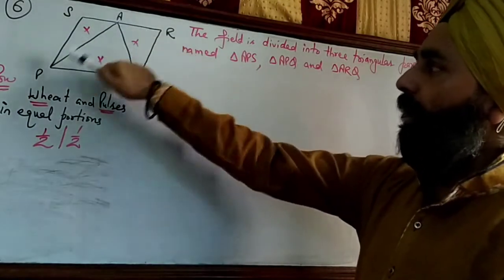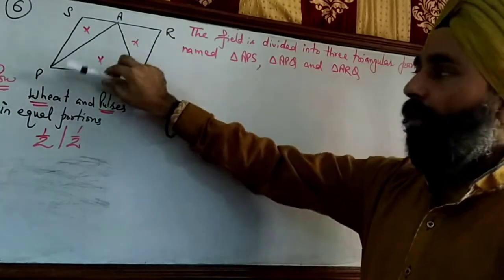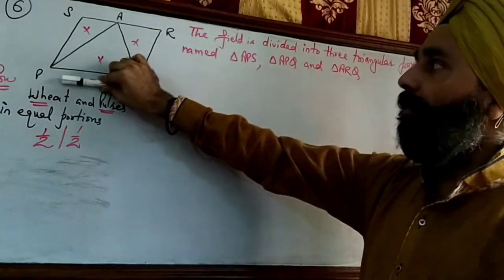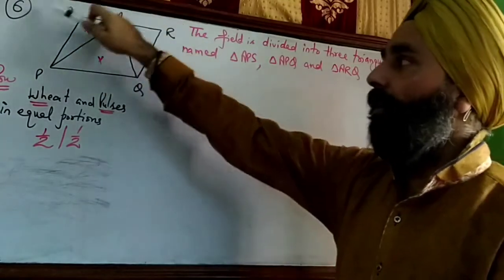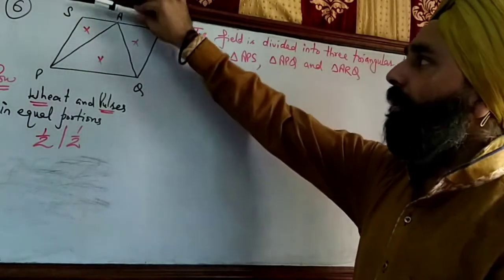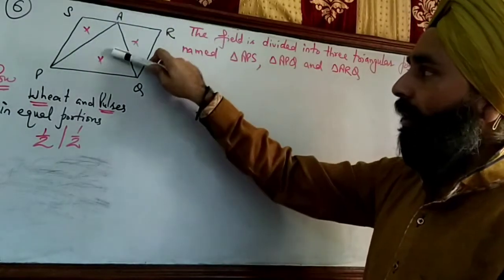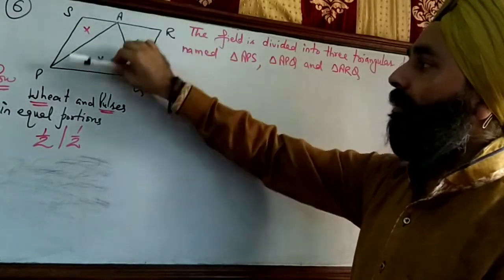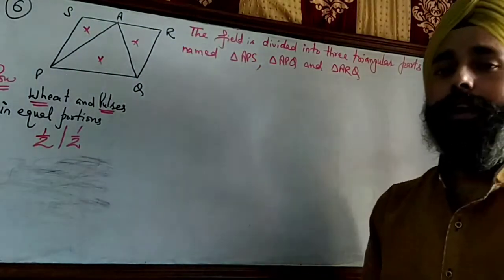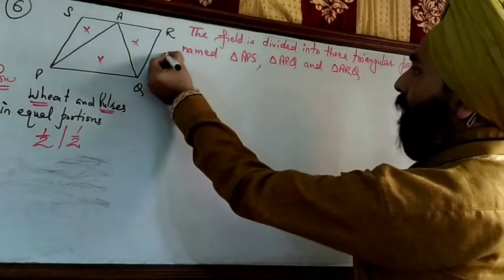We have this triangle APQ and parallelogram on the base PQ. PQ is common to both triangle and the parallelogram. These are both on the same base and between the same parallels. Since triangle and parallelogram are on the same base and between the same parallels, area of triangle will be half of the area of parallelogram.